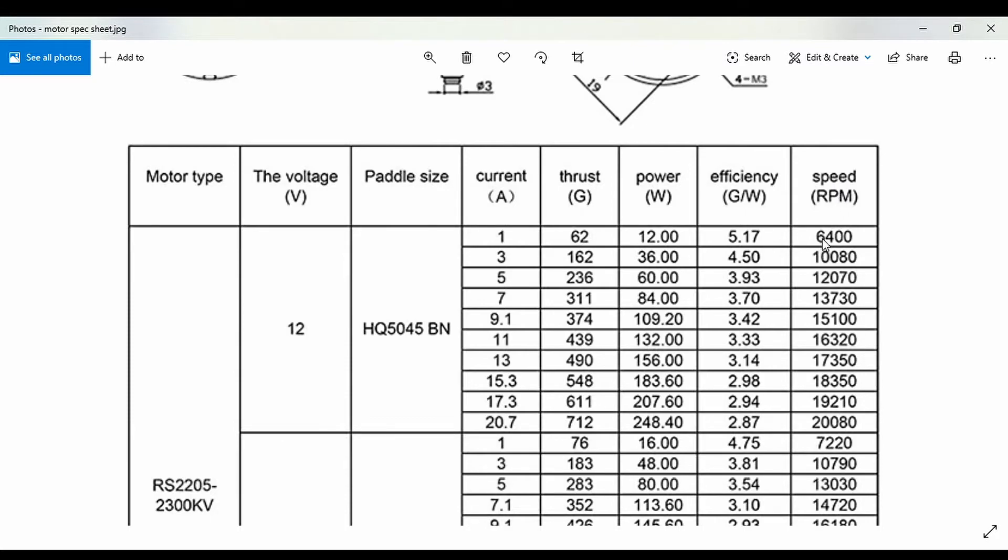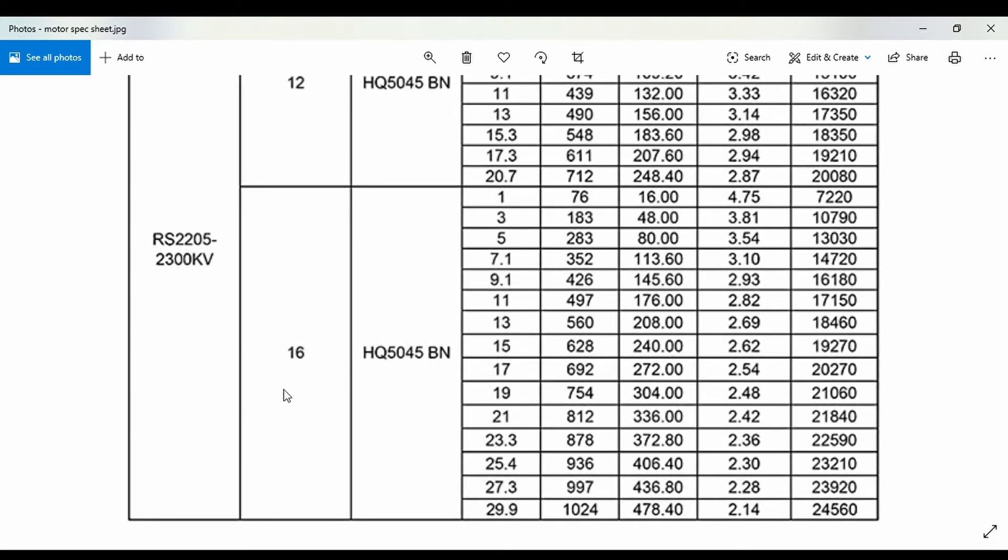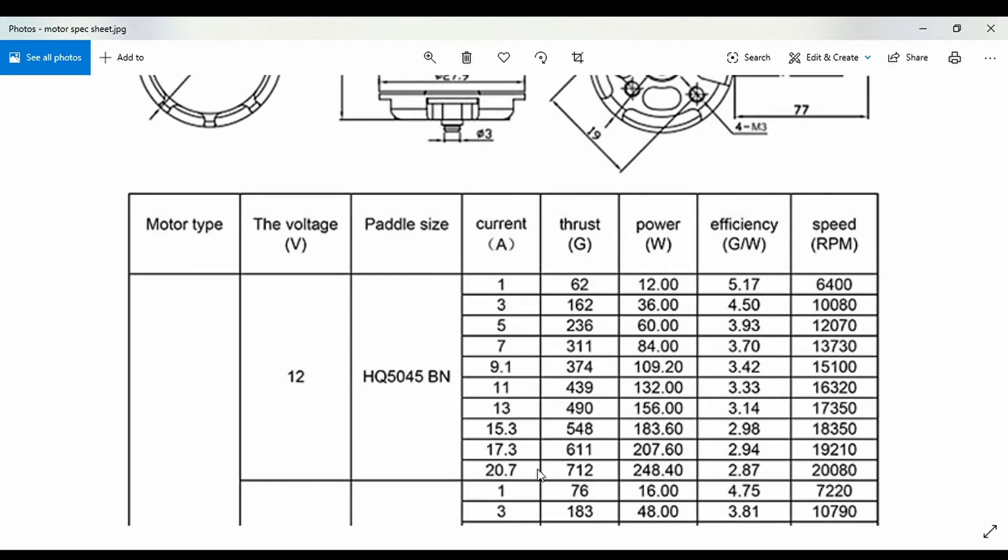This is just the RPM of the motor at this particular current. At max, it will spin at 20,000 revolutions per minute. Similarly, we have the table for 16 volts. As you can see, the max current for 16 volts is 29.9 amps, almost 30 amps, and it generates a thrust of almost 1 kg.